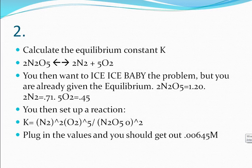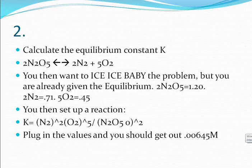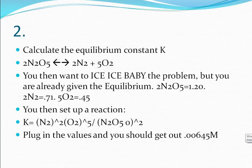Question number two, consider the following chemical equation 2N2O5 goes to and comes back 2N2 plus 5O2. At equilibrium the concentration of O2 is 0.45 molar and the concentration of N2O5 is 1.2 molar, and the concentration of N2 is 0.71 molar.